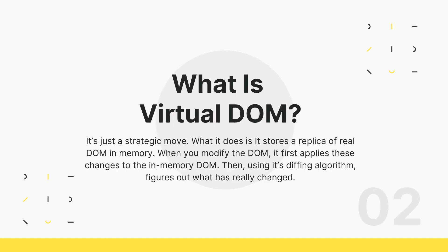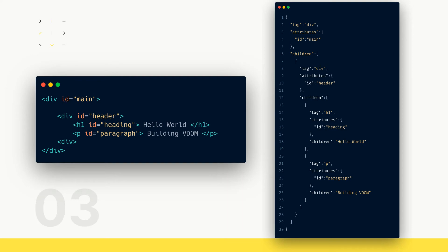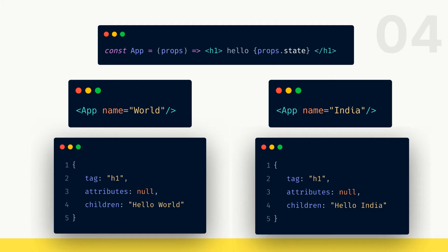Let's look at how virtual DOM actually looks. Here's some HTML code for our real DOM that can be generated from a virtual DOM object, where we have the tag name, attributes, and children for each tag. Inside children we can also have an array of other components that are nested inside the parent component.